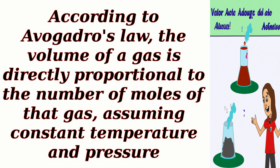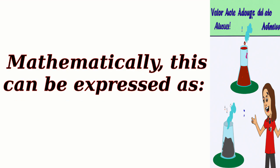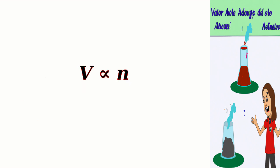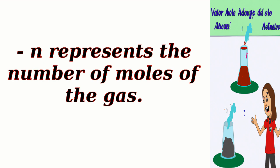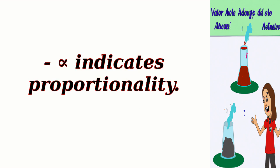According to Avogadro's law, the volume of a gas is directly proportional to the number of moles of that gas, assuming constant temperature and pressure. Mathematically, this can be expressed as V is proportional to N, where V represents the volume of the gas, N represents the number of moles of the gas, and the proportionality symbol indicates a direct relationship.